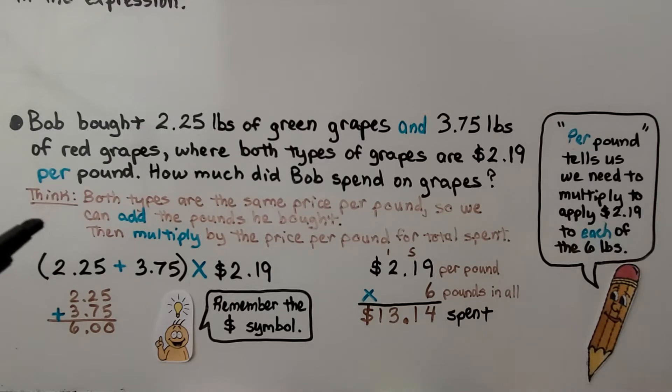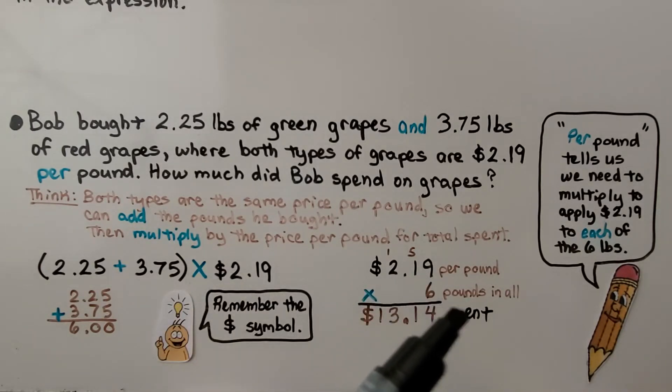So we think both types of grapes are the same price per pound. They're both $2.19. So we can add the pounds he bought then multiply by the price per pound for total spent. The per pound tells us we need to multiply to apply that $2.19 to each of the 6 pounds. When we add the 2.25 plus the 3.75, we get 6 even. We're going to multiply $2.19 by 6. It's the price per pound for 6 pounds in all.